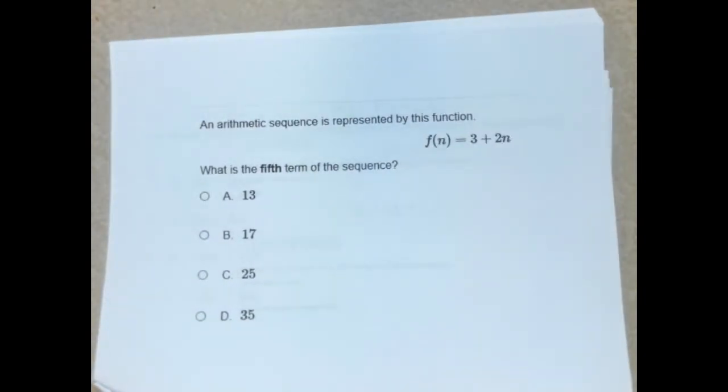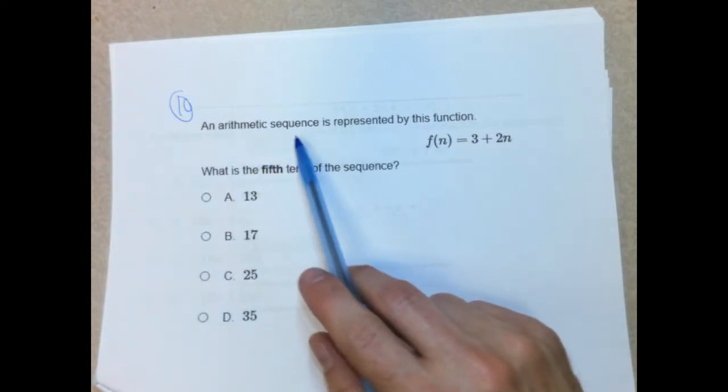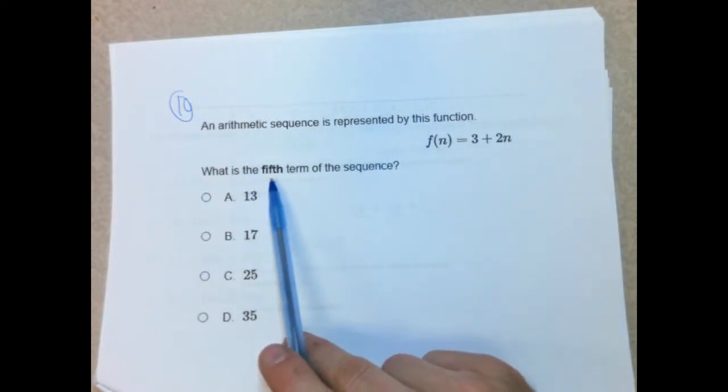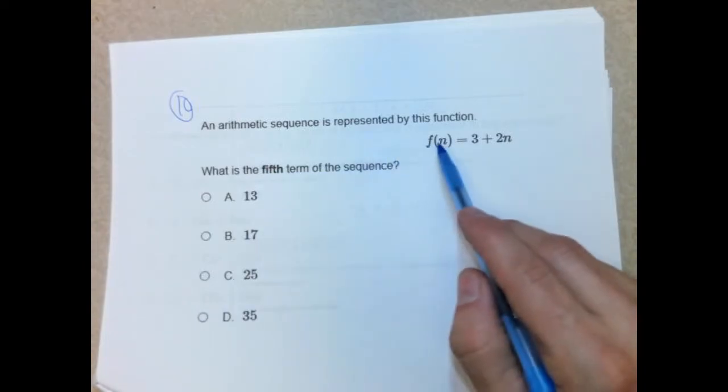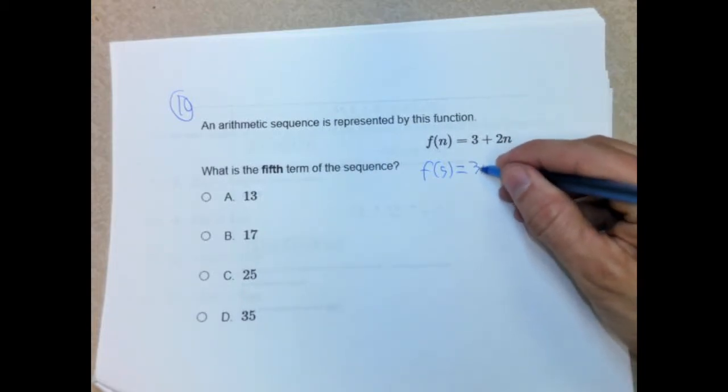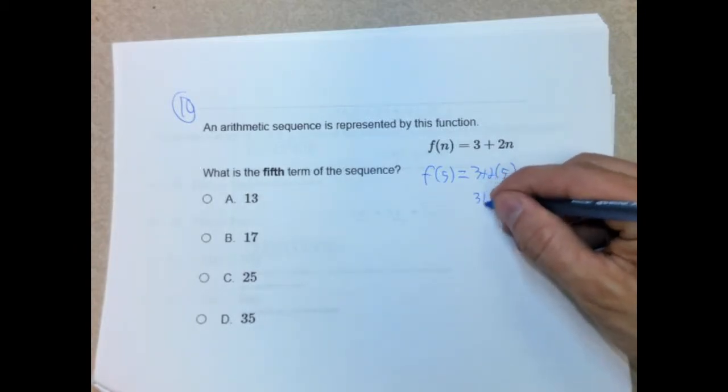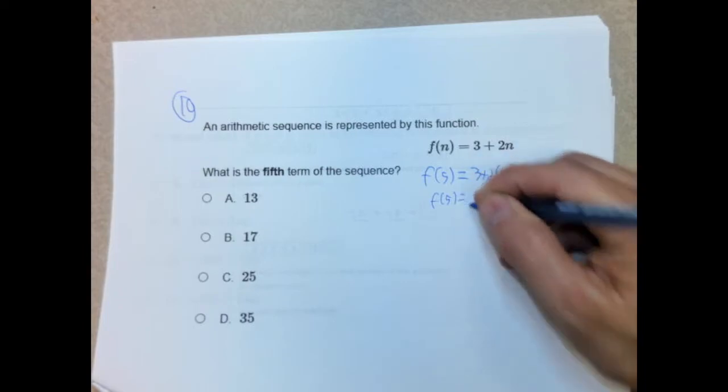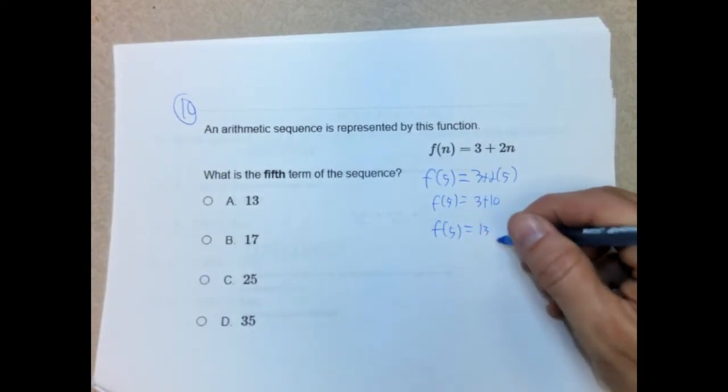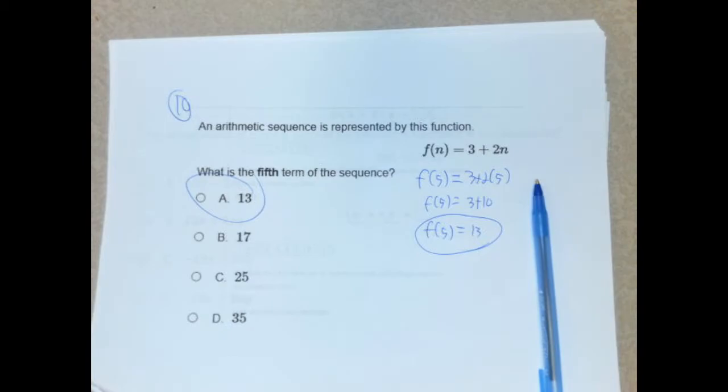Okay. Number 10. So it's saying here an arithmetic sequence is represented by this function. What is the fifth term in this sequence? So this is testing our ability to evaluate an expression. So the fifth term means n would be 5. So we're going to say f of 5 equals 3 plus 2 times 5. Order of operations tells us we're going to do 2 times 5, which is 10. So 3 plus 10, f of 5. And 3 plus 10 is obviously 13. So f of 5 would be 13.